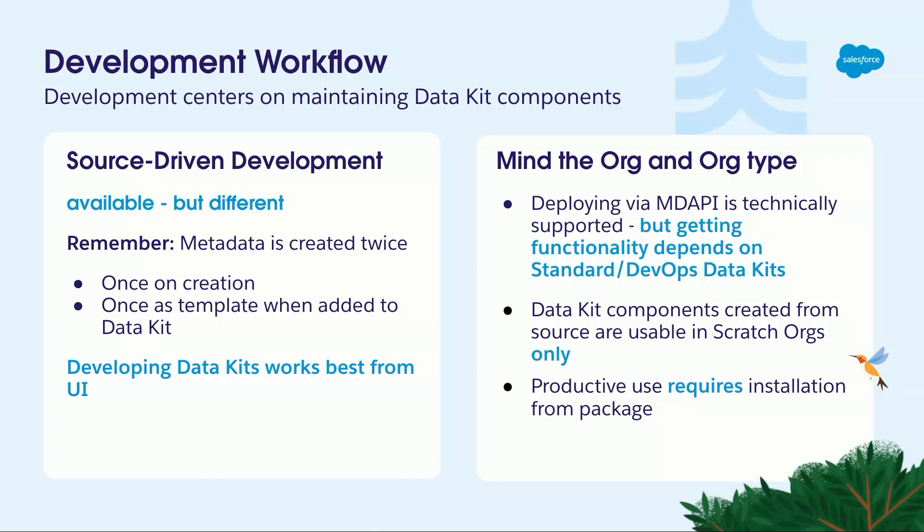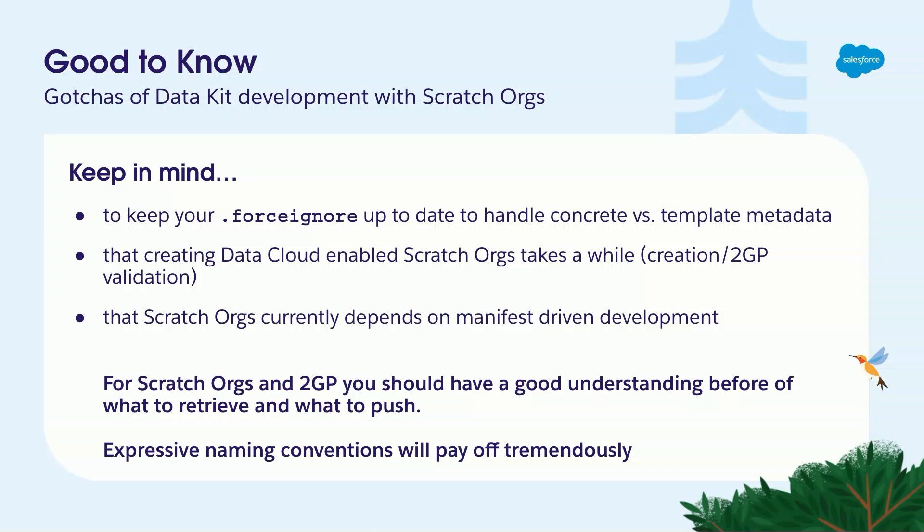That's what makes the development workflow — in particular the source-driven development workflow — a bit different from what we know, because everything that we have exists twice and we have to filter that accordingly. Because of that, and because of dependency spidering, developing data kits is actually done best from the UI in that old package user interface from first-generation packaging. The force ignore file is the essence of what you have to maintain, because there's a lot of noise coming through when you pull for the first time.